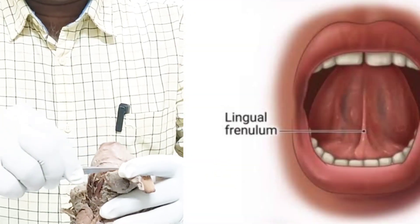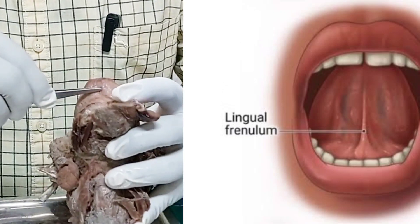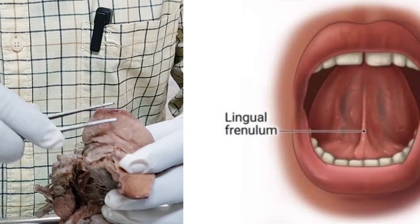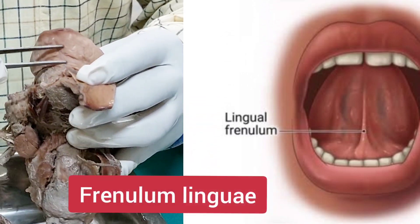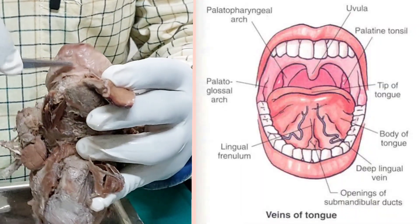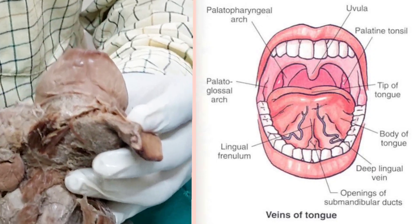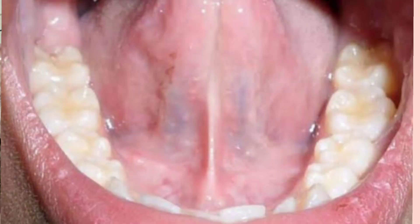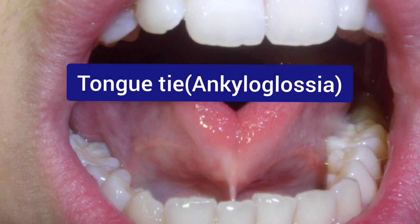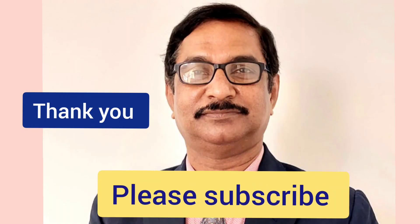On the under surface — the ventral surface — there is no posterior part, only the anterior part. Here there is a mucous fold in the midline called the frenulum linguae, which is a fold of mucous membrane. On each side of the frenulum linguae you will get papillae, the opening of the submandibular duct, and the deep lingual veins. If the frenulum linguae is short, the condition is called tongue tie — in that case the tongue cannot be moved freely because of the shortening of the frenulum linguae. These are the important anatomical parts and features of the tongue.